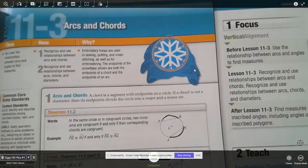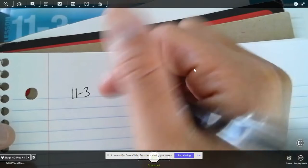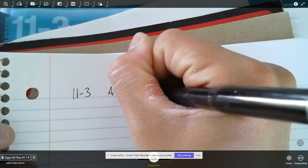I'm going to go through 11-3, which we didn't really get to go over in class, but I'm going to try my best to go through here. So, 11-3, arcs and chords. I'm going to write at the top, this is arcs and chords.